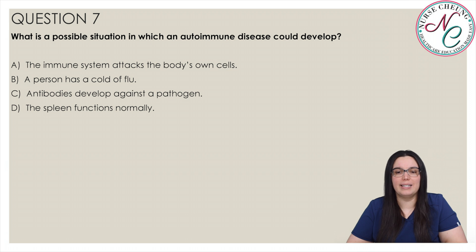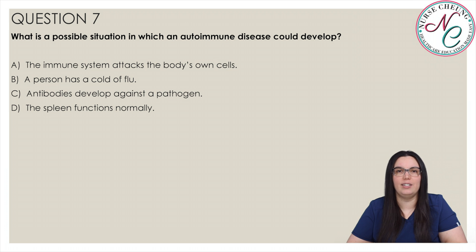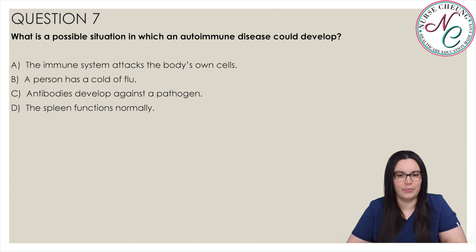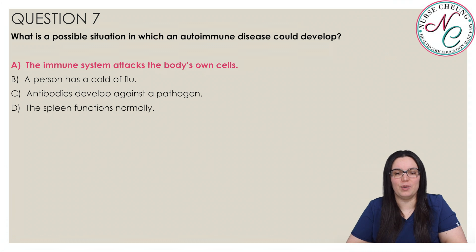What is a possible situation in which an autoimmune disease could develop? Is it A, the immune system attacks the body's own cells; B, a person has a cold or flu; C, antibodies develop against a pathogen; or D, the spleen functions normally? And the correct answer is A, the immune system attacks the body's own cells.